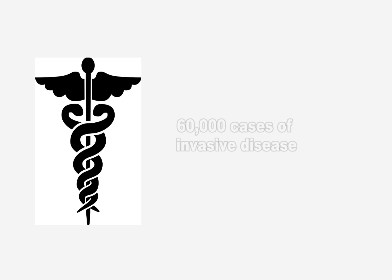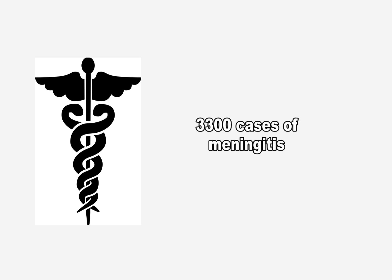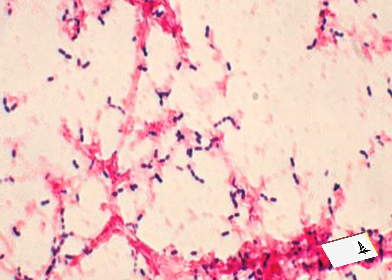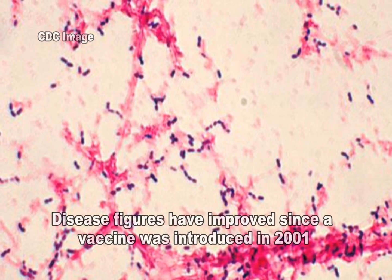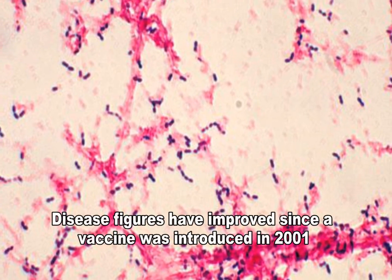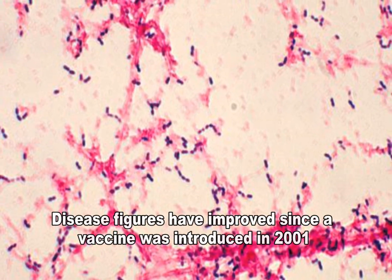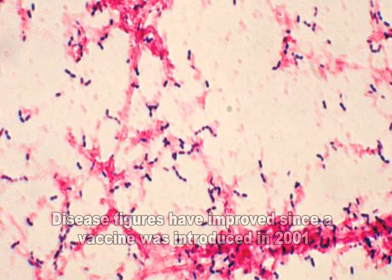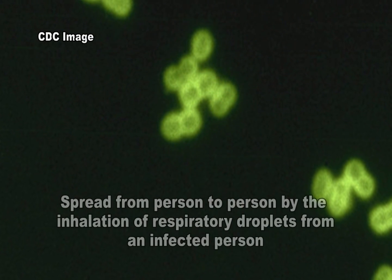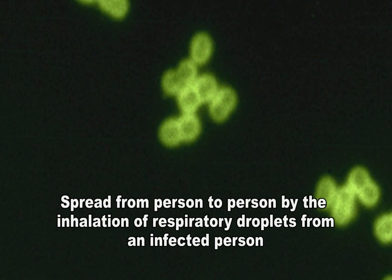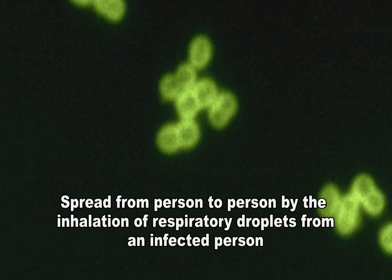Until 2000, Streptococcus pneumoniae infections caused 100,000 to 135,000 hospitalizations for pneumonia, six million cases of ear infections, and 60,000 cases of invasive disease, including 3,300 cases of meningitis. Disease figures have improved since a pneumococcal conjugate vaccine was introduced in 2001.